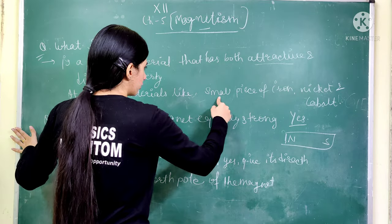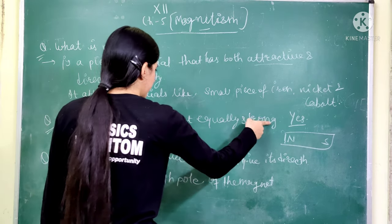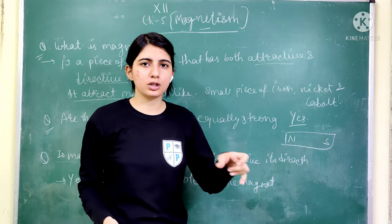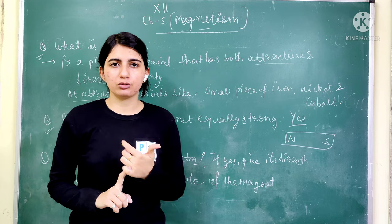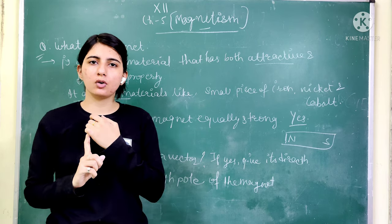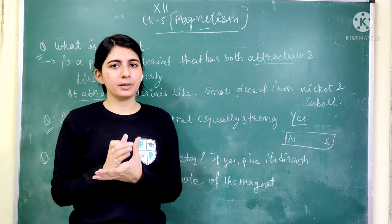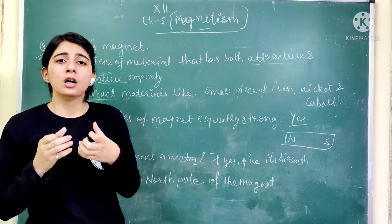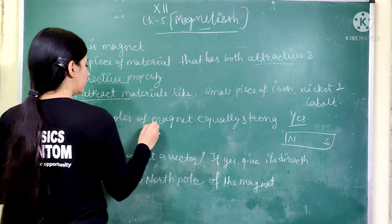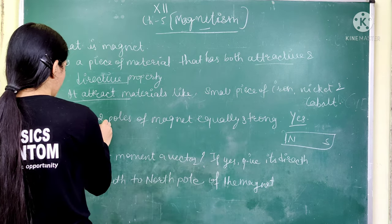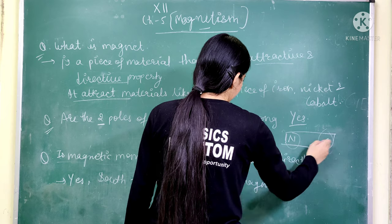Next question: are the two poles of a magnet equally strong? A bar magnet has two poles — north pole and south pole. When both poles are the same — north-north — there is repulsion. When poles are opposite — north-south — there is attraction. So, are both poles equally strong? The answer is yes, they are equally strong.